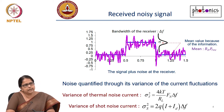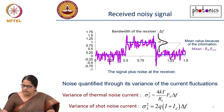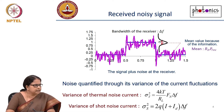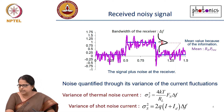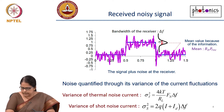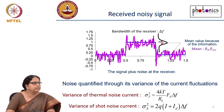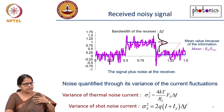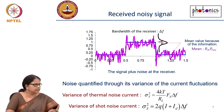We quantify this noise through the variance or standard deviation, which tells the spread about the mean value. Thermal noise arises from random motion of electrons, while shot noise arises from the statistics of incoming photons — which follows Poissonian statistics.